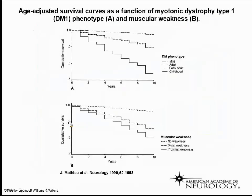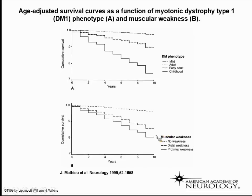This is a study published in Neurology about 15 years ago looking at cumulative survival using Kaplan-Meier curves over 10 years, looking at different phenotypes: mild, adult, early adult, and childhood onset. There's maybe not much difference between adult and early adult, but a big difference between mild and childhood presentation — the earlier it begins, the shorter the survival. The congenital form means those babies often don't survive infancy. There's also survival data based on pattern of weakness: patients without much weakness survive the longest, those with distal weakness have intermediate survival, and those with a lot of proximal weakness have the worst prognosis.